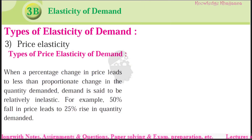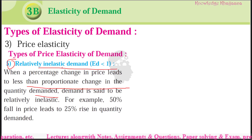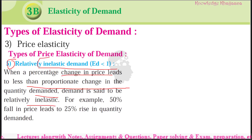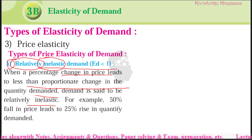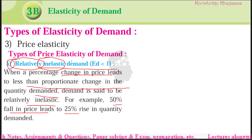When the percentage change in price leads to less than proportionate change in the quantity demanded, that is the fifth type — relatively inelastic demand. The demand is said to be relatively inelastic. Demand is inelastic compared to the change in price. For example, if there is 50% fall in price, demand increases only to 25%. So demand remains relatively inelastic — it didn't change much, it didn't become more flexible with the change in price. That is called as relatively inelastic demand.